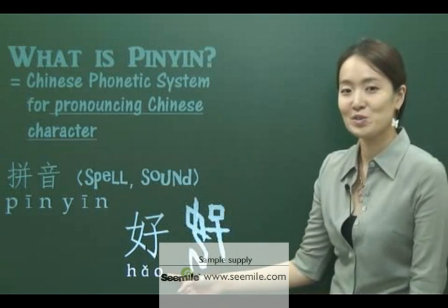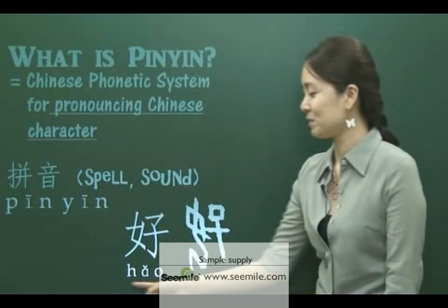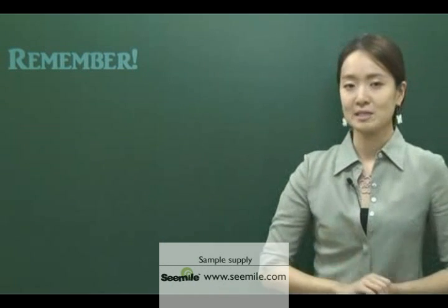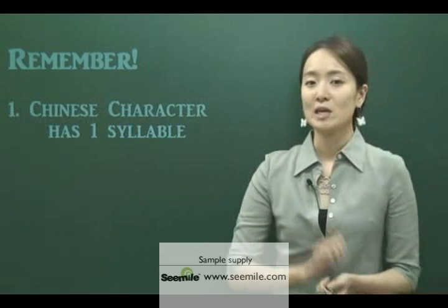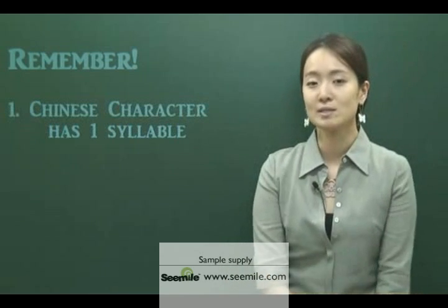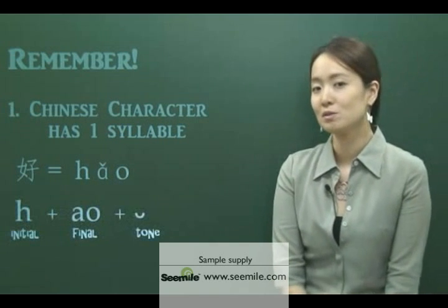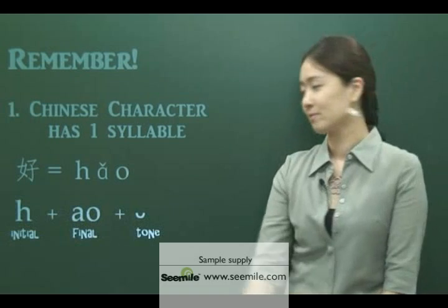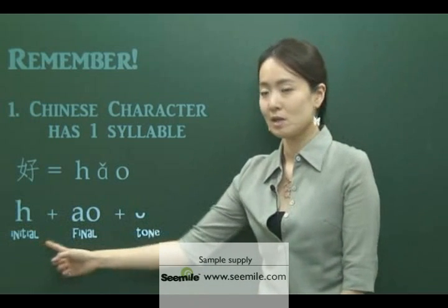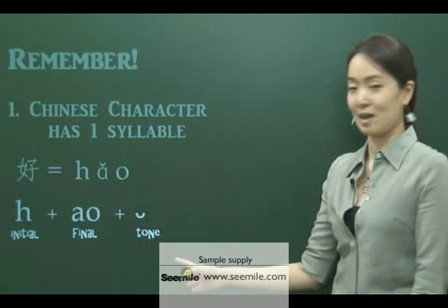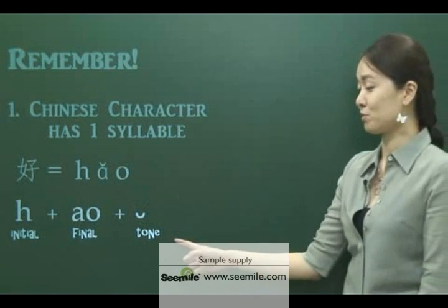Now you know how to pronounce this character with Pinyin. It's 'Hao.' There are a couple of things you have to remember about Pinyin. First of all, each Chinese character has one syllable, and that syllable consists of three parts: initial, final, and tone. Initial is consonants, final is vowels, and tone is this little mark. We are going to talk about tone very soon.